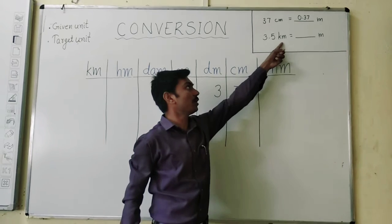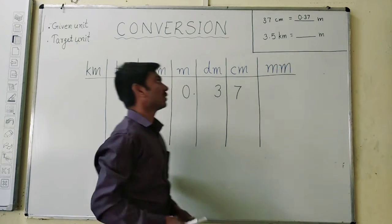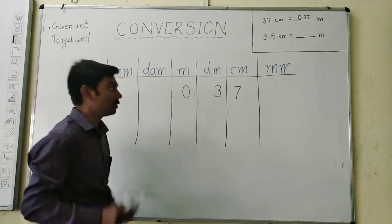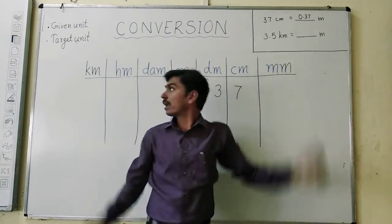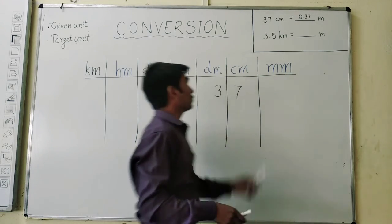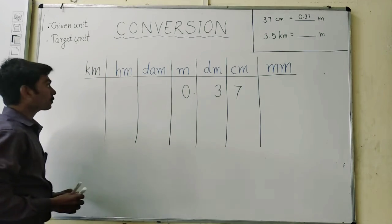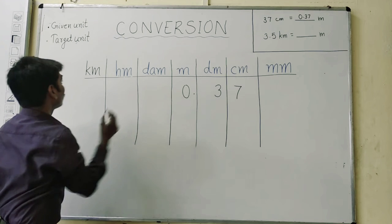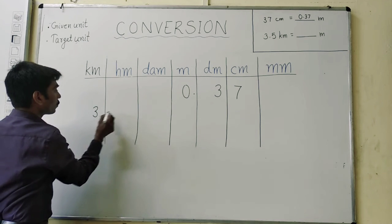3.5 km into meter. So just see what is our given unit. The given unit is 3.5 km and the target unit is meter. So first step is to write the given unit in this table. In the km column, we have to write 3.5.